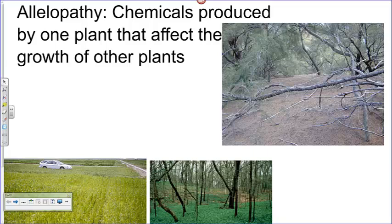The plants here produce a chemical that's found in all parts of the plant — it's found in the dead leaves, which are these little brown needly-looking things, and it's found in the roots. Those chemicals inhibit or stop the growth of any other plants. So despite the fact that they could grow there — there's plenty of water, the soil's right — once these plants take over, they produce chemicals that make the soil inhospitable or uninhabitable by other plants.